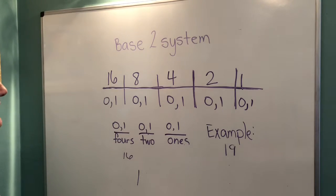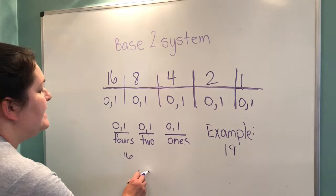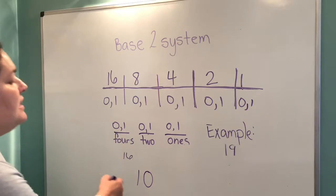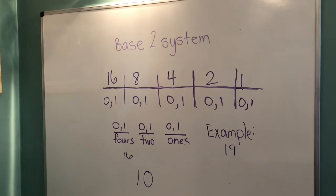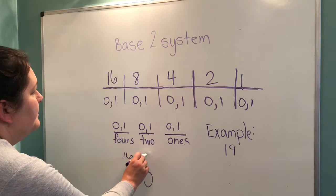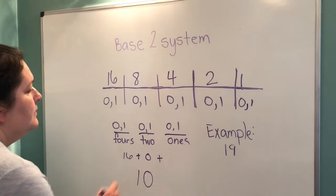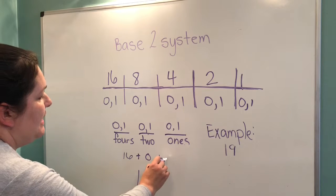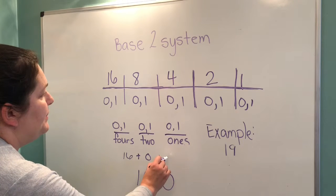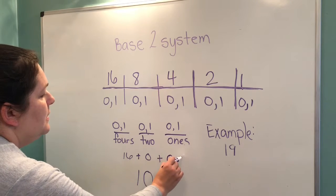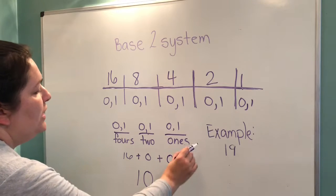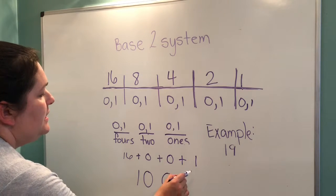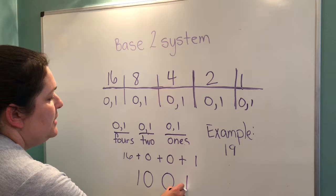We cannot use an 8 because that would put us over. So, we put a 0 in the place value. 0 is a placeholder just like in our base 10 system. So, we don't use any 8s. We don't use any 4s because that would put us at 20. That's too much. So, another 0 is a placeholder. We use 1, 2. So, we add 1, 2 to that.